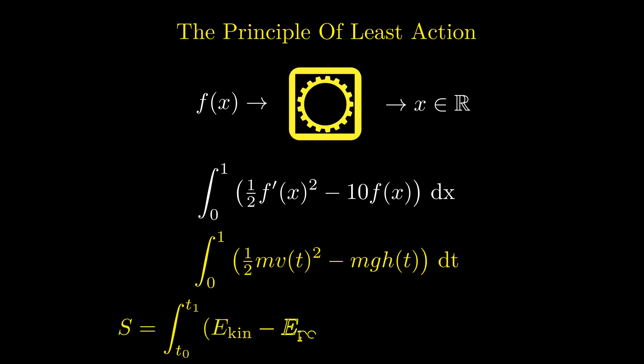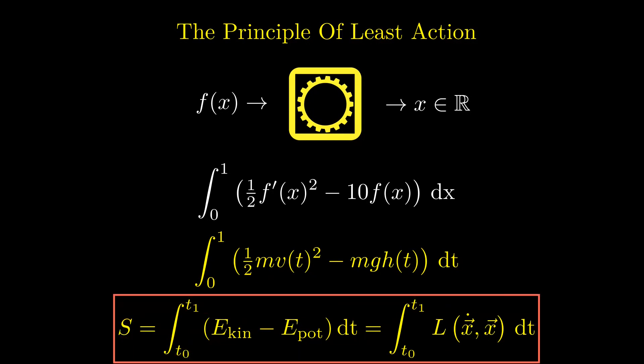In the language of physics, the two terms correspond to the kinetic and the potential energy of the falling object. And the difference of the two energies is usually called the Lagrangian of the system. Moreover, in physics, time derivatives are denoted with a dot instead of primes.